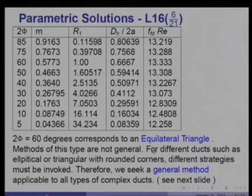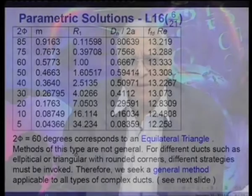Methods of this type are not general. For different ducts — such as elliptical or triangular with rounded corners, which are very commonly encountered in practical heat exchangers — different trial functions must be invoked and considerable algebra is required before a solution is obtained. For each duct, one has to treat it as a special case. Our interest now turns to more complex ducts requiring a general method applicable to ducts of arbitrary cross section.